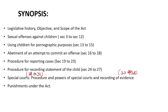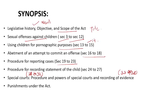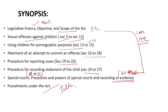Let's review the synopsis again. We have covered: the history, need, object, and scope of the act; the title of the act; actual offenses against children (Sections 3 to 12); using children for pornographic purposes (Sections 13 to 15); abetment of and attempt to commit an offense (Sections 16, 17, 18); procedure for reporting cases (Sections 19 to 23); procedure for recording statement (Sections 24 to 27); special court (Sections 28 to 32); procedures (Sections 33 to 38). Various case laws have been covered throughout. Punishments were given in a table format. I hope you understood the topic — thank you.